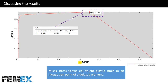Some elements are colored in red, and these red elements will be removed in the following increments. This is the curve of Mises stress versus equivalent plastic strain. This is the elastic region — in the elastic region the Mises stress increases but the equivalent plastic strain is equal to zero. This is the plastic region, this is the damage initiation point, this is the damage evolution region, and this is the fracture point.